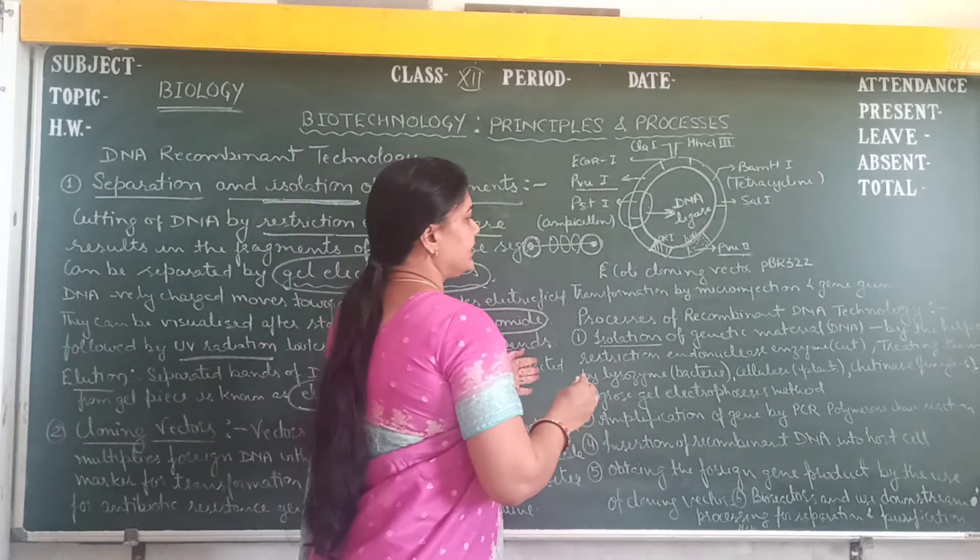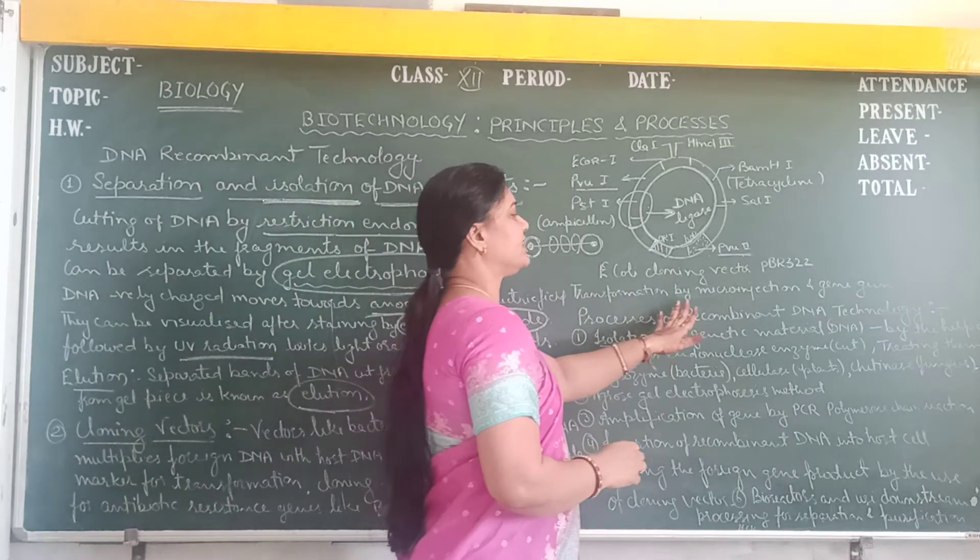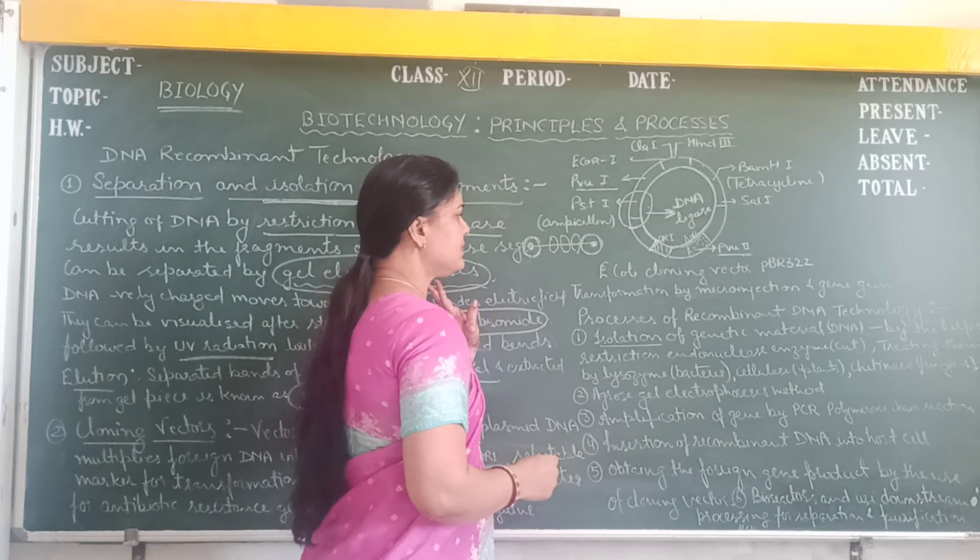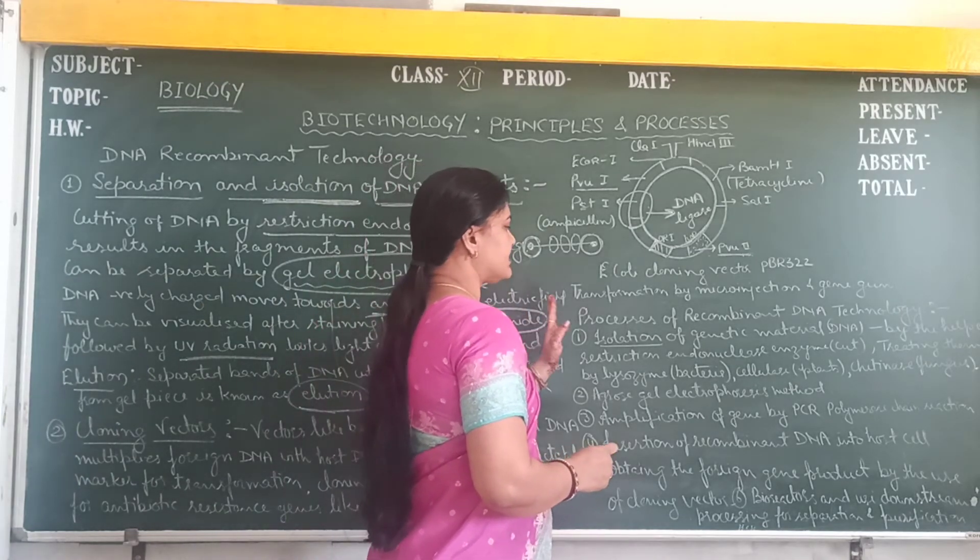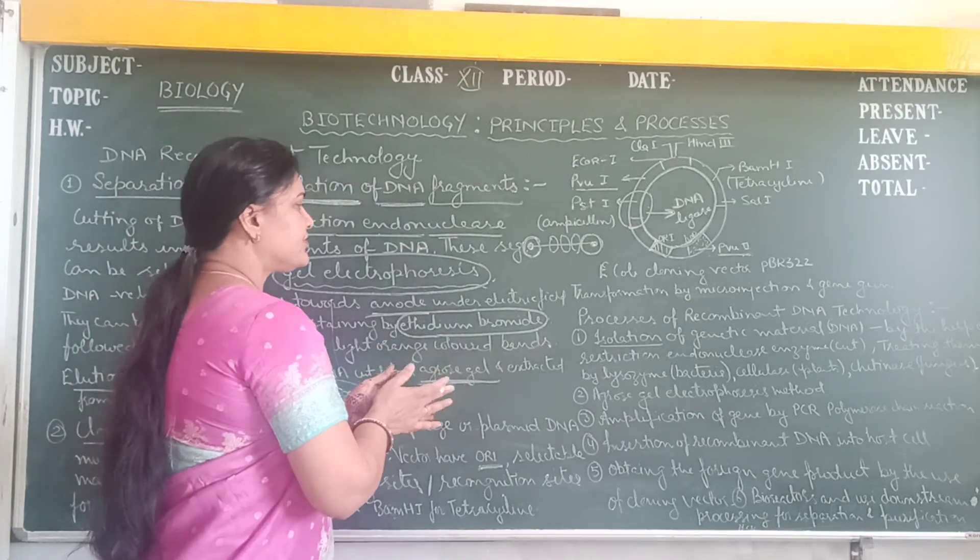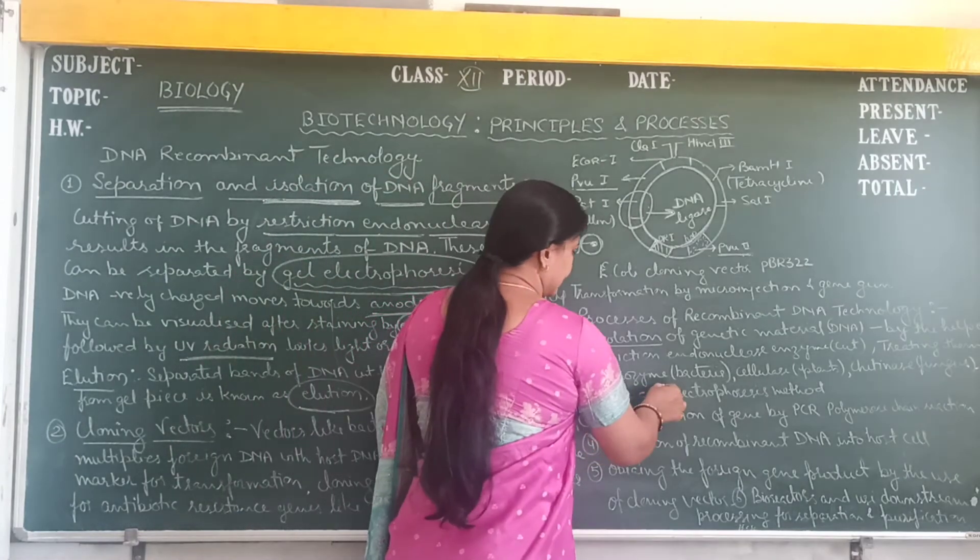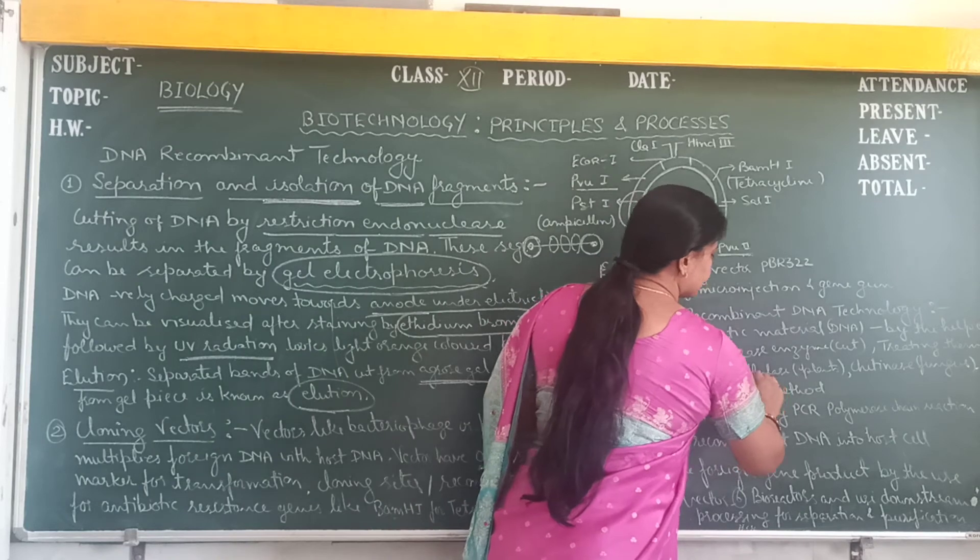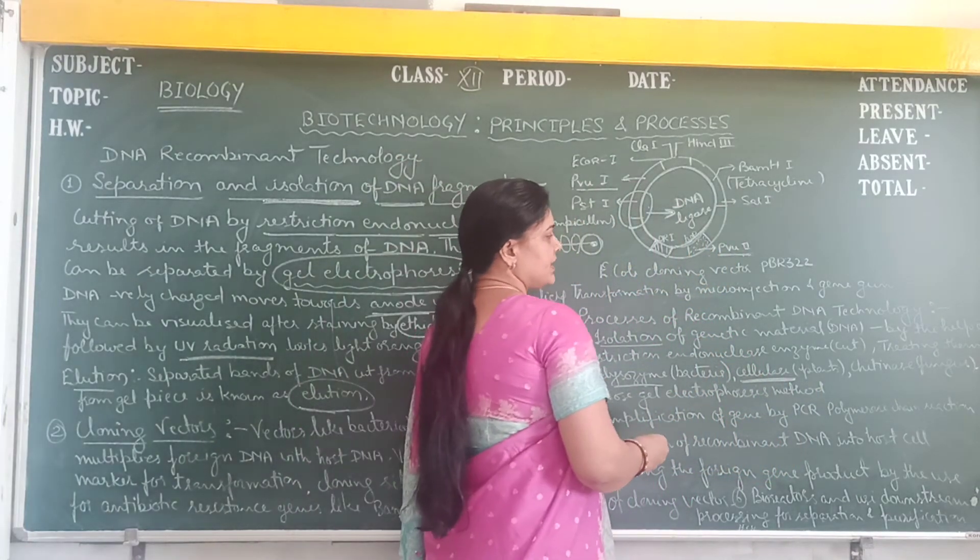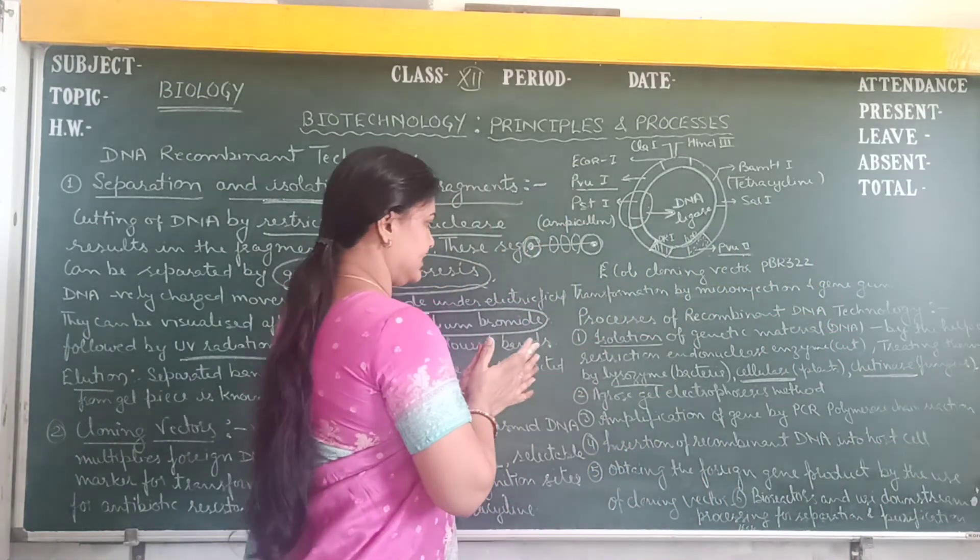Now the process of recombinant technology includes five steps. What are the five steps? The first one is isolation of genetic material. Genetic material is DNA in the organism. By the help of restriction endonuclease and exonuclease enzymes, we can cut the DNA fragments. Then treating them by the lysozyme in bacterial cells. Lysozyme is an enzyme. Cellulase is an enzyme which is used in the plant for plant DNA, and chitinase is used for fungus DNA.